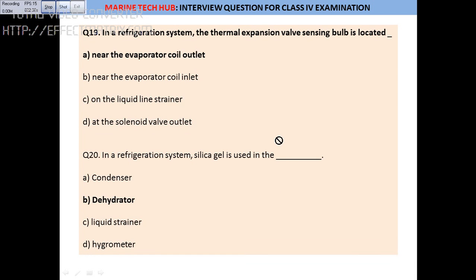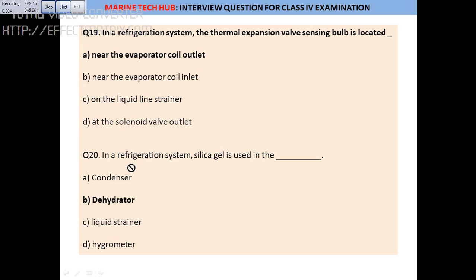Question 19: In a refrigerant system, the thermal expansion valve sensing bulb is always located near the evaporator coil outlet side. It should not be loose — it should be tightened properly.